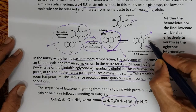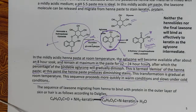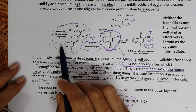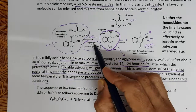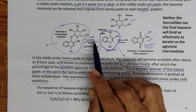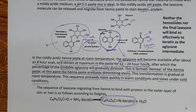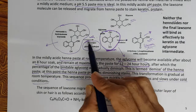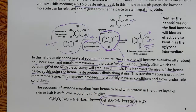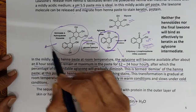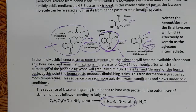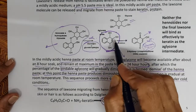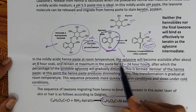The hennosides get converted into aglycone, the aglycone gets attached to keratin forming a complex, and subsequently it is oxidized to the lawsone-keratin complex giving the dark brown color. Lawsone is not soluble in water — if you take pure lawsone and try to color the hair it will not work. Likewise pure hennosides alone will not color the hair; the enzymes, moisture, and oxidation are all needed. Therefore good henna will have a high content of hennosides, not free lawsone — the hennoside content is what matters.